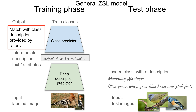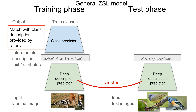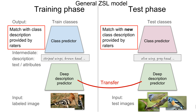On test time, we get a set of image samples from unseen classes. Each class comes with a semantic description. Our goal is to predict the class for each sample. First, we transfer the description prediction network. Then, we map the predicted descriptions to test classes by matching them with the new class description provided by raters.